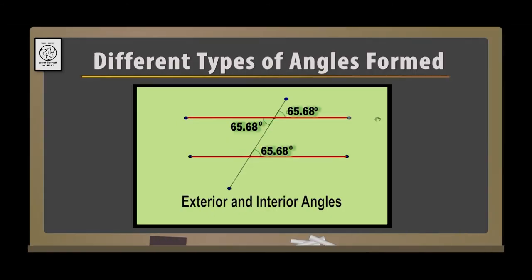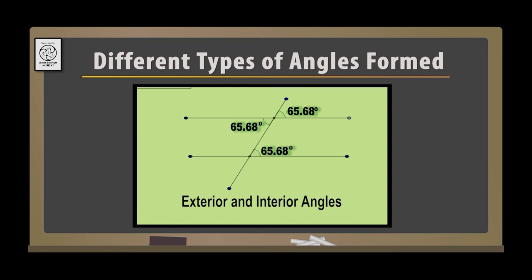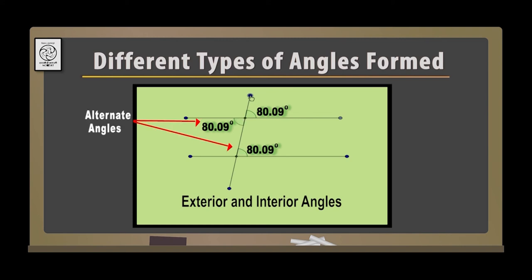When two lines are parallel, the corresponding angles become equal. Similarly, the alternate angles are also equal. For parallel lines, the alternate angles are always equal and the corresponding angles are also equal. So even if we drag this line, you will find the alternate angles remain the same and the corresponding angles remain the same.